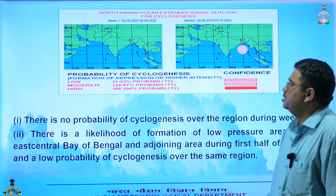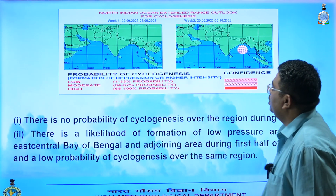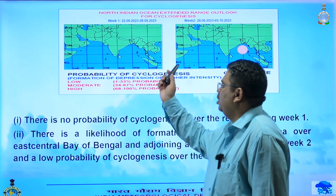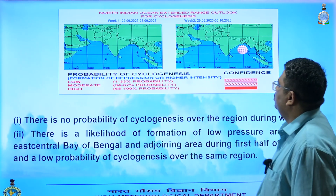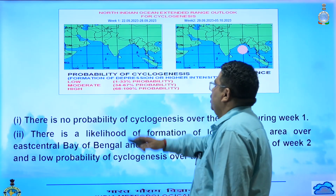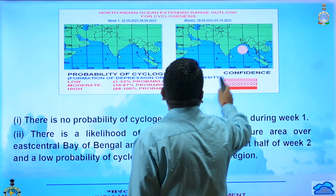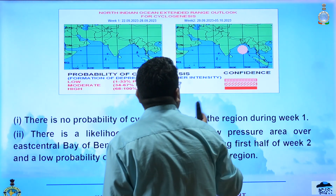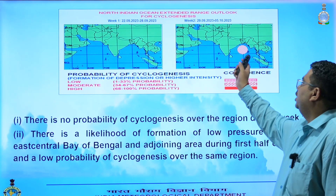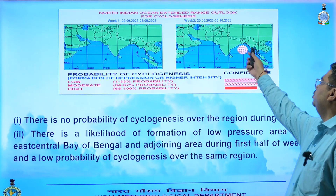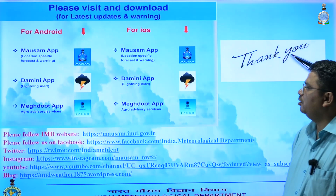This figure shows the possibility of cyclogenesis — that is, formation of a system stronger than a depression. In Week 1, there is no possibility of any depression or above system. However, in Week 2, over east-central Bay of Bengal, there is a low probability of cyclogenesis formation, as shown in the right-hand side figure.